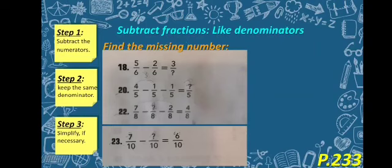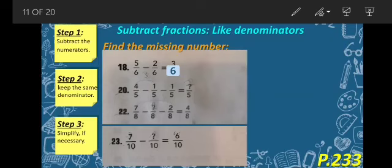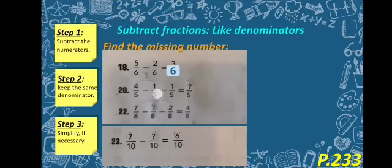Our next question is find the missing number: 5 over 6 minus 2 over 6 equals 3 over what? We agreed that we don't subtract the denominator — we just keep it as it is. So it will be 3 over 6. Number 20: 4 over 5 minus 1 over 5 minus 1 over 5. We work from left to right: 4 minus 1 equals 3, then 3 minus 1 equals 2. So it will be 2 over 5.